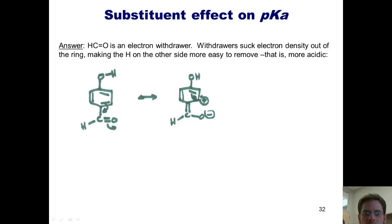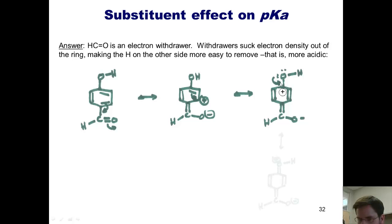If these pi electrons flip in there and close that door, I get a positive charge at this position. You'll notice that with a positive charge here, I can take these lone pairs and flip them down to give me this resonance structure where there's a partial positive charge on the oxygen.